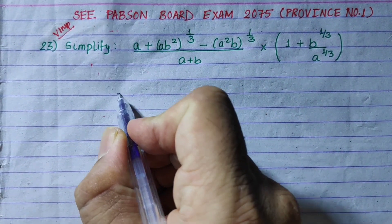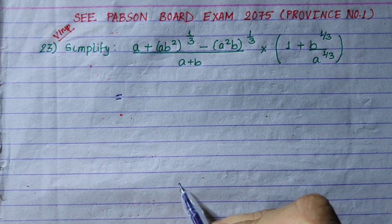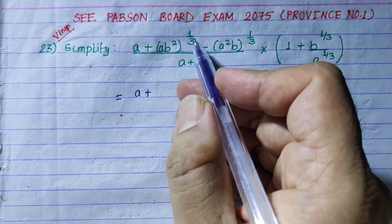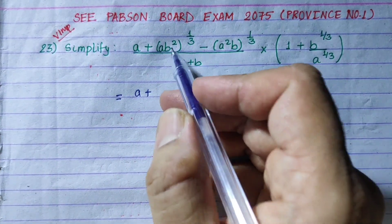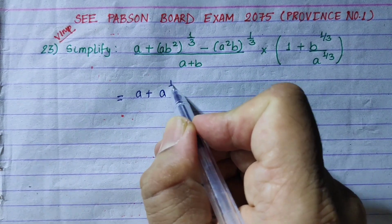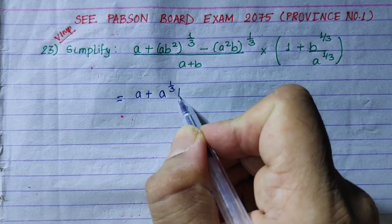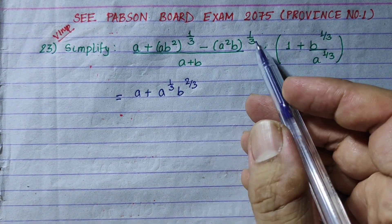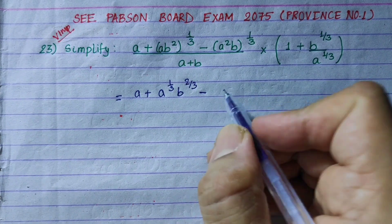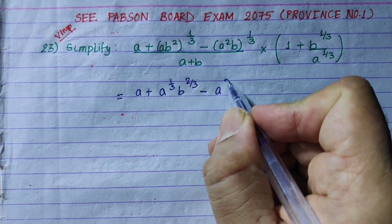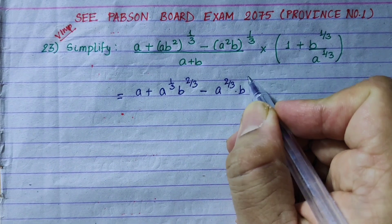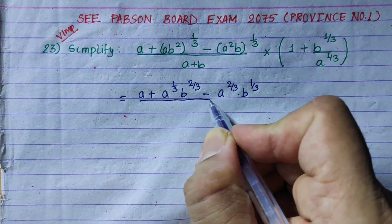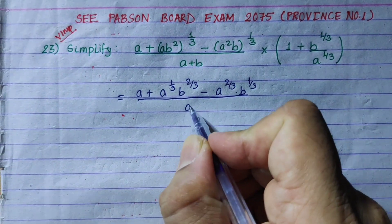Now we are going to work through this. We are going to open the bracket — this is one bracket, and this is another bracket. Then A to the power 1/3, then B to the power 2/3. In the third term, we will open this bracket with power 1/3, giving A to the power 2/3 and B to the power 1/3. The denominator will be A plus B.